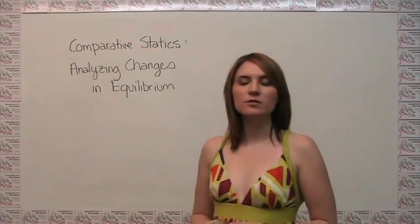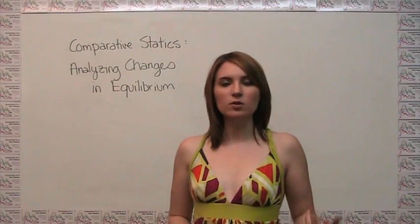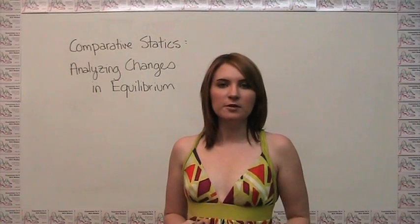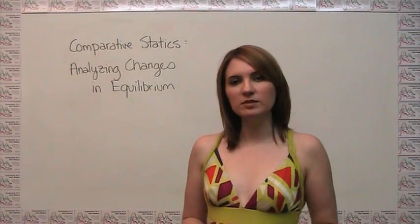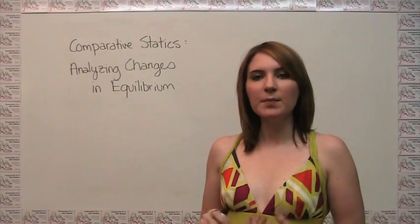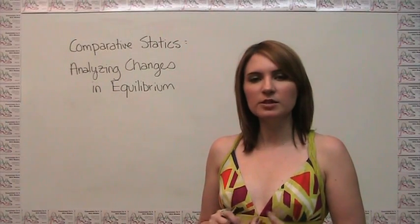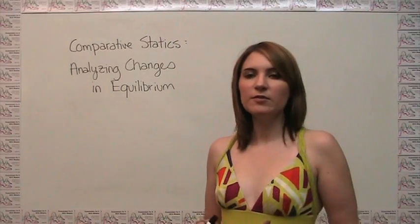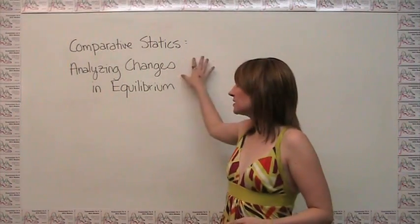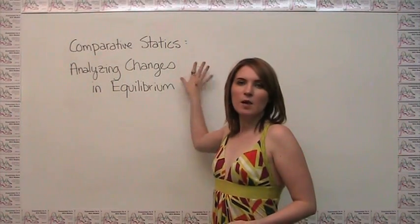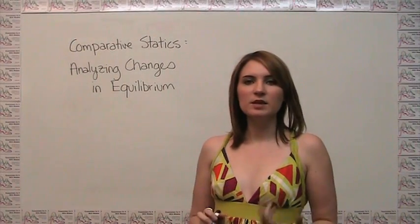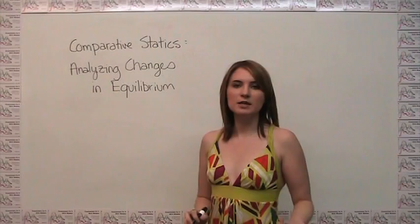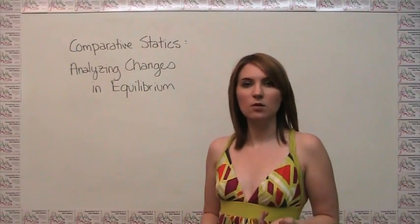Now that we know how to find equilibrium price and quantity in a market, we can move that one step further to say once a market has reached equilibrium, what happens when there's a shock to that market in terms of a change in either supply or demand. Economists have a fancy word for this called comparative statics, but we really just mean let's analyze the changes in equilibrium due to a change in either supply, demand, or both.